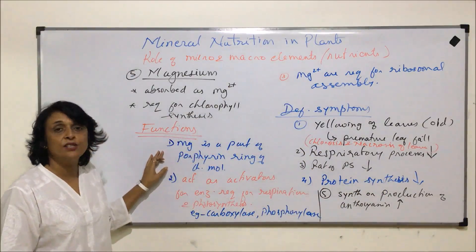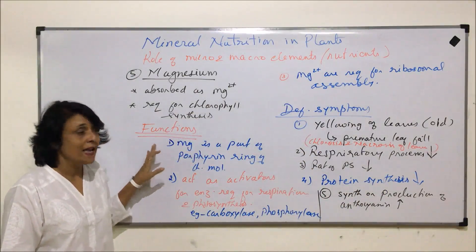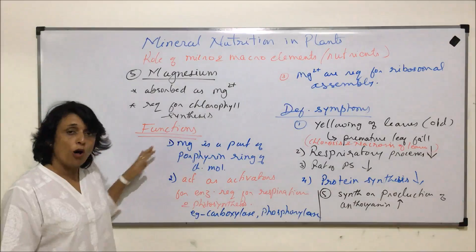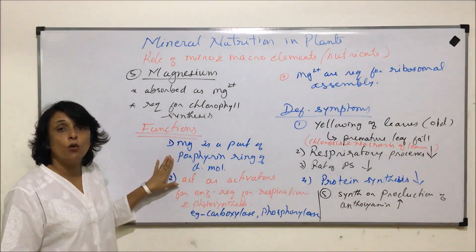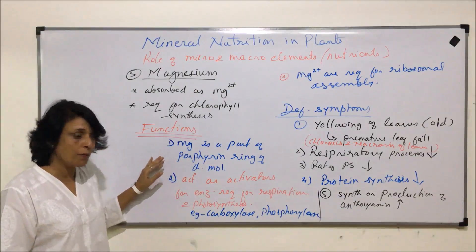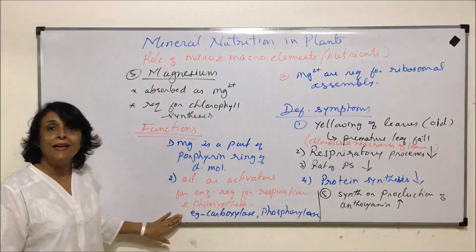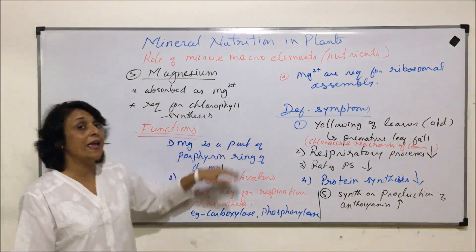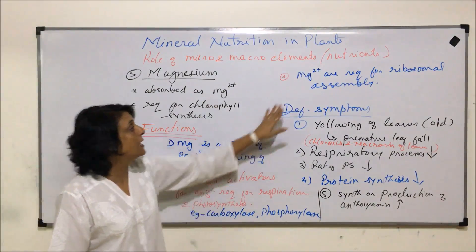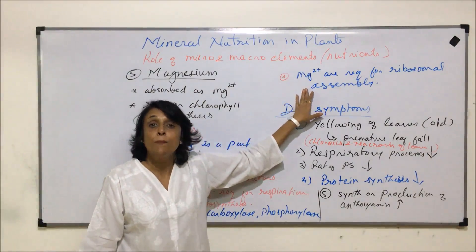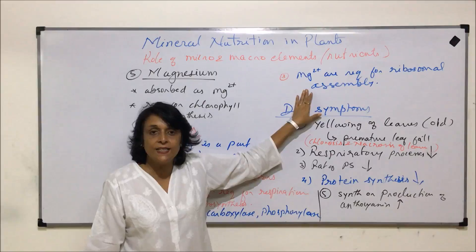In summary, all three roles of magnesium are important: first, in chlorophyll molecule formation; second, activation of main process-controlling enzymes for respiration and photosynthesis; and third, ribosomal assembly for protein synthesis. These are the deficiency symptoms of magnesium.